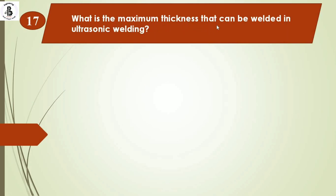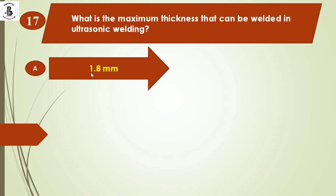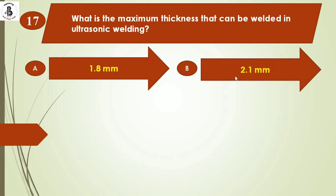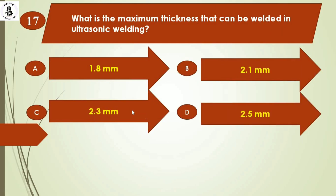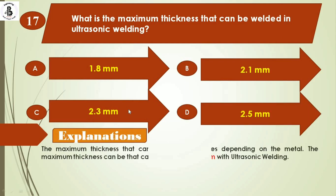Next question: what is the maximum thickness that can be welded in ultrasonic welding? Option A: 1.8 mm. Option B: 2.1 mm. Option C: 2.3 mm. Option D: 2.5 mm. The maximum thickness achievable with ultrasonic welding varies by metal, but the maximum is around 2.5 mm. So the right answer is option D.